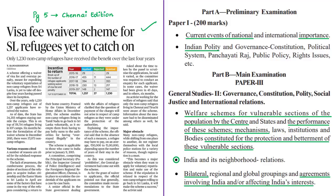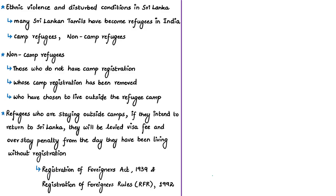This news article is about a visa fee waiver scheme framed by the central government in the year 2015. Thousands of Sri Lankan Tamils became refugees in India because of ethnic violence and disturbed conditions in Sri Lanka since 1983. Many refugees were willing to return after the conflict ended in 2009. These refugees staying in India do so in two ways: some stay in refugee camps under government control, receiving accommodation, electricity, drinking water, toilet facilities, monthly cash assistance, free clothing, and educational support; others stay outside the refugee camps.